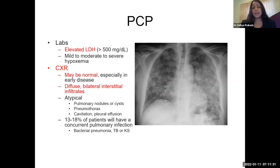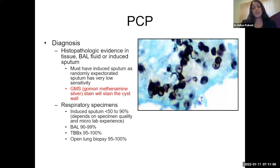Atypical radiographic presentations of PCP include pulmonary nodules or cysts, pneumothorax, cavitary disease, and pleural effusion. Up to 18% of patients will have a concurrent bacterial pulmonary infection — either bacterial pneumonia, tuberculosis, or infection due to Kaposi's sarcoma. Diagnosis is based on histopathologic evidence in tissue, bronchoalveolar lavage fluid, or an induced sputum. Never get a random sputum culture — it must be induced, as randomly expectorated sputum has very low sensitivity. You send it for a GMS stain — the Gomori methenamine silver stain — where you see staining of the cyst walls.